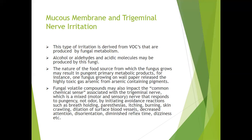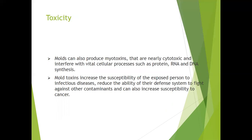Irritation affects the mucous membrane and trigeminal nerve. This type of irritation is derived from the VOCs produced by fungal metabolism. Alcohol, aldehyde, or acidic molecules may be produced by these fungi. The nature of the food source may result in pungent primary metabolic products — for instance, fungus growing on wallpaper can produce highly toxic gases. Moulds can also produce mycotoxins that are cytotoxic and interfere with vital cellular processes such as proteins, RNA, and DNA.